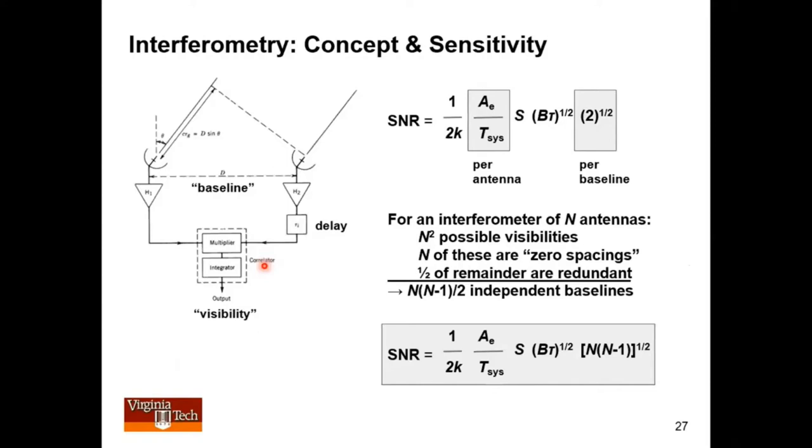Then you do the correlation, right? The correlation is just multiplying and integrating. The output of that is what we refer to as a visibility. So when I say visibility, I'm talking about a correlation. They are synonyms.